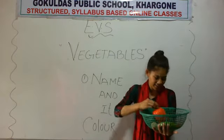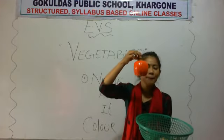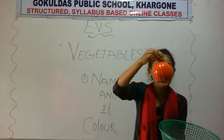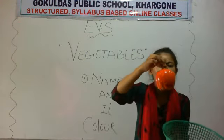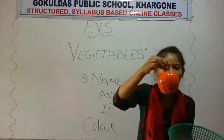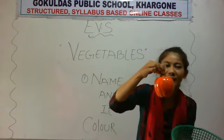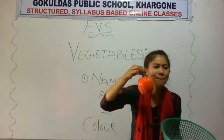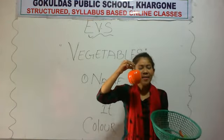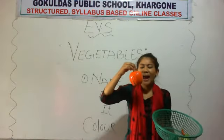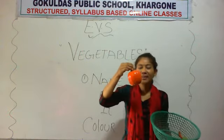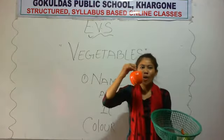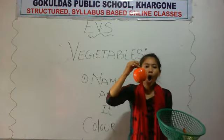Now see. What is this? Pumpkin. What is this? This is vegetable. And what is the color of this pumpkin? Orange color. What is this? This is pumpkin. What is the color of this pumpkin? Orange color.